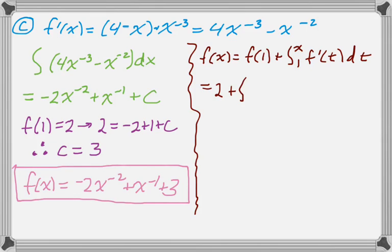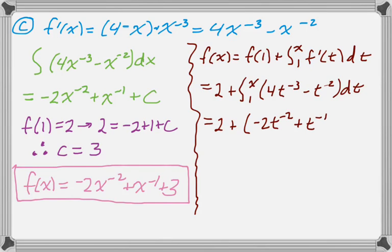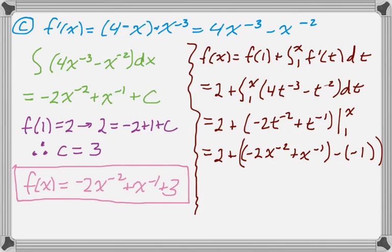f of 1 is 2. And then replace f prime of t with what it's equal to. And now we're just going to integrate that. So plus 1 times reciprocal and plus 1 times reciprocal from 1 to x. So we get 2. And then if I substitute in x, I get that. And then if I substitute in 1, I just end up with negative 2 plus 1, which is negative 1.